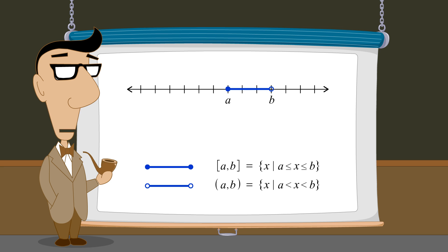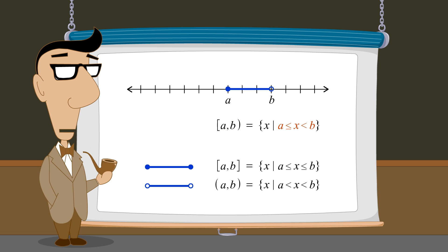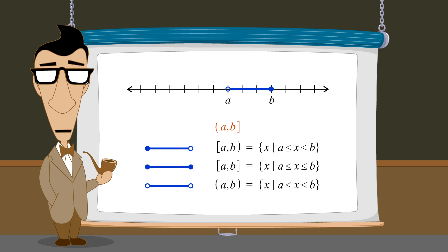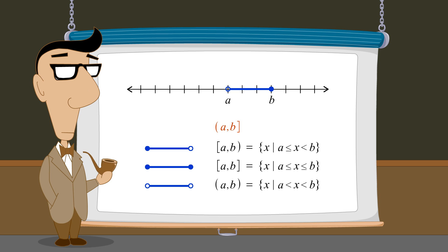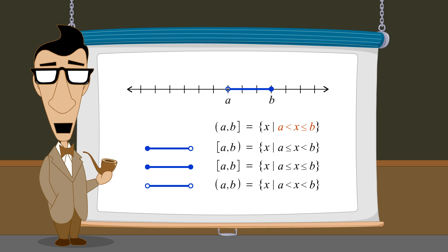If the interval includes the left endpoint but not the right, then we say that the interval is left closed and right open. Since A is included and B is excluded, the set consists of all numbers greater than or equal to A and less than B. And if the interval includes the right endpoint but not the left, then the interval is right closed and left open. Since A is excluded and B is included, the set consists of all numbers greater than A and less than or equal to B.